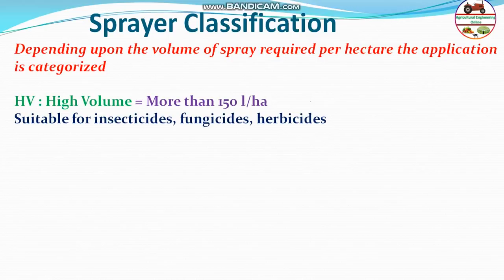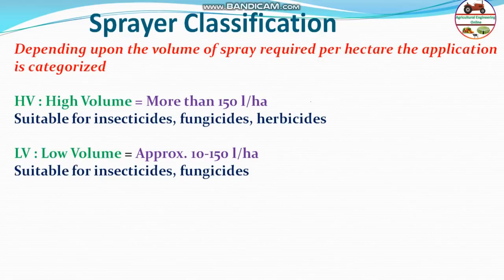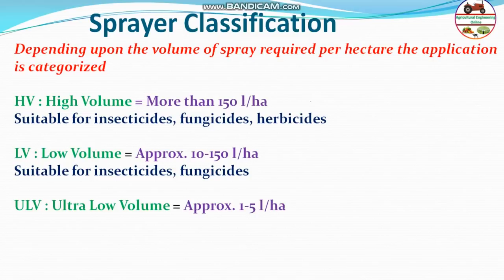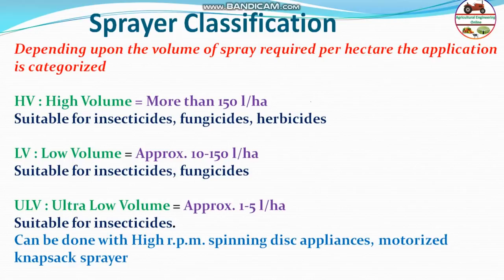Low volume sprayers apply approximately 10 to 150 liters per hectare and are generally suitable for insecticides and fungicides. Herbicides are mostly applied using high volume sprayers, not low volume. Ultra low volume (ULV) sprayers apply around 1 to 5 liters per hectare — a very small, accurately atomized amount, suitable for insecticides. ULV can be achieved using high-RPM spinning disc applicators or motorized knapsack sprayers that produce very fine droplets.